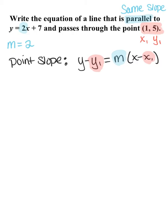Let's give that a go. We're going to start off with y minus, and I'm going to pull that y sub 1 number, which is 5. That's equal to - I'm going to bring that slope in of 2, and we're going to multiply that by the quantity (x minus 1).